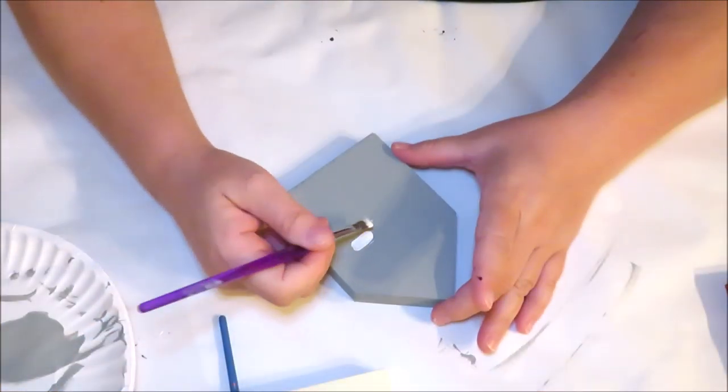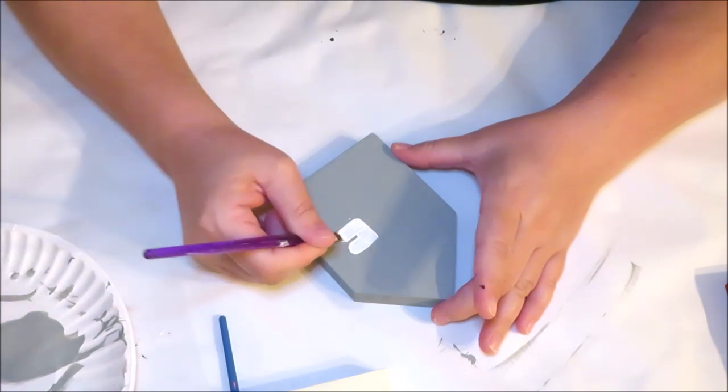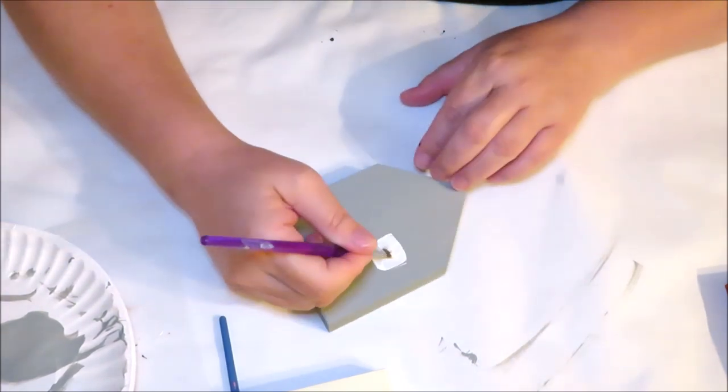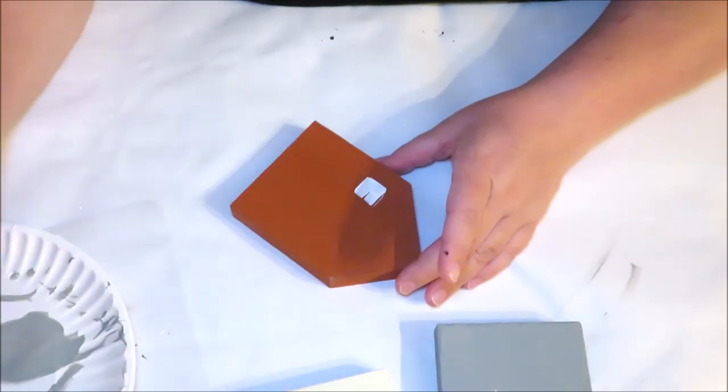After my house colors had dried, I went ahead and started off with some simple shapes, some squares and rectangles for their windows, letting them dry completely before adding any detail.